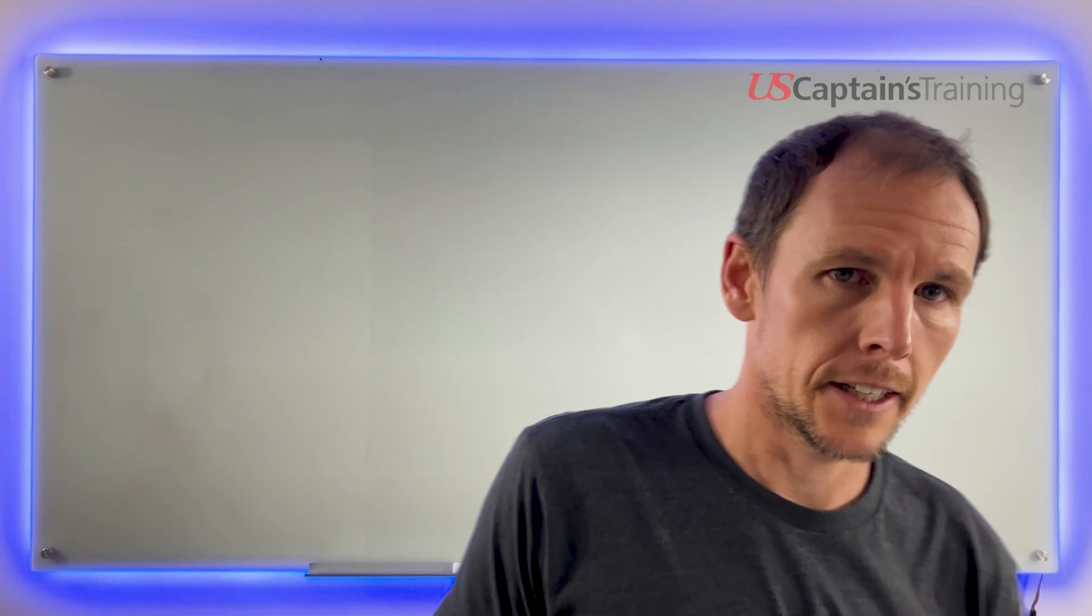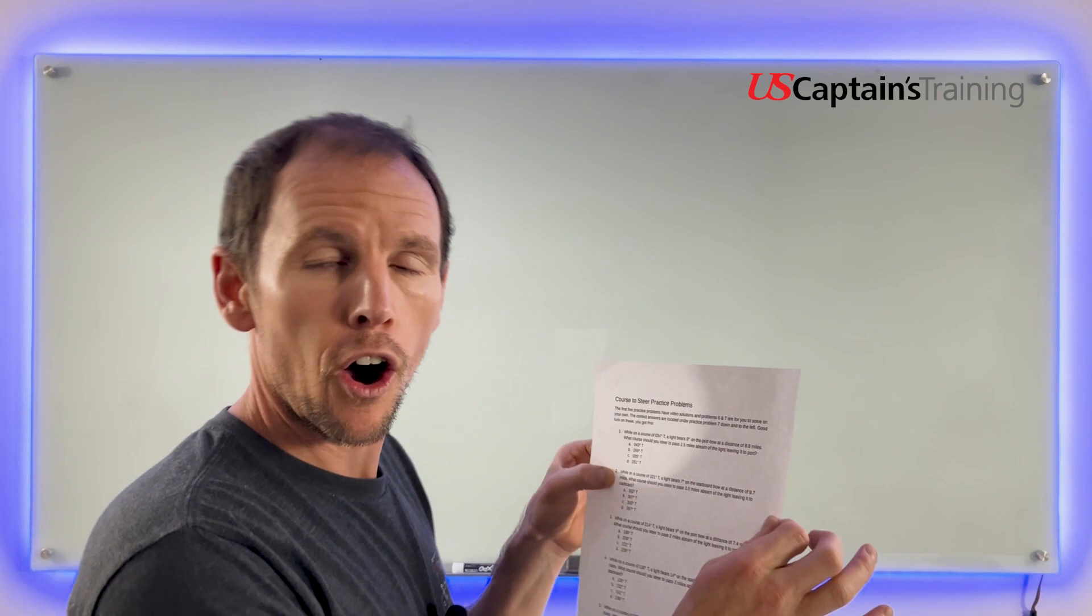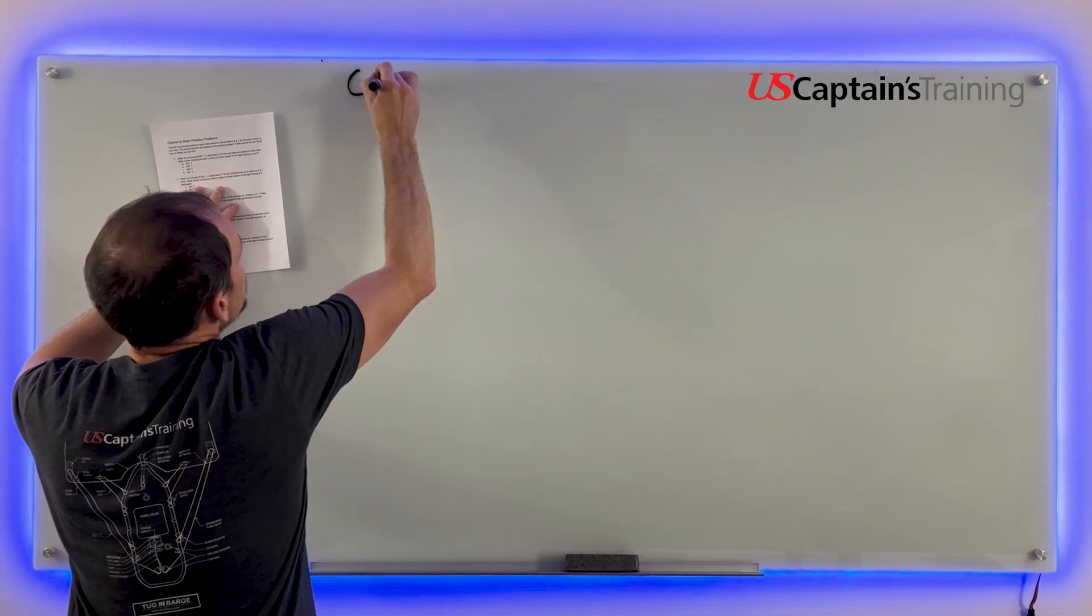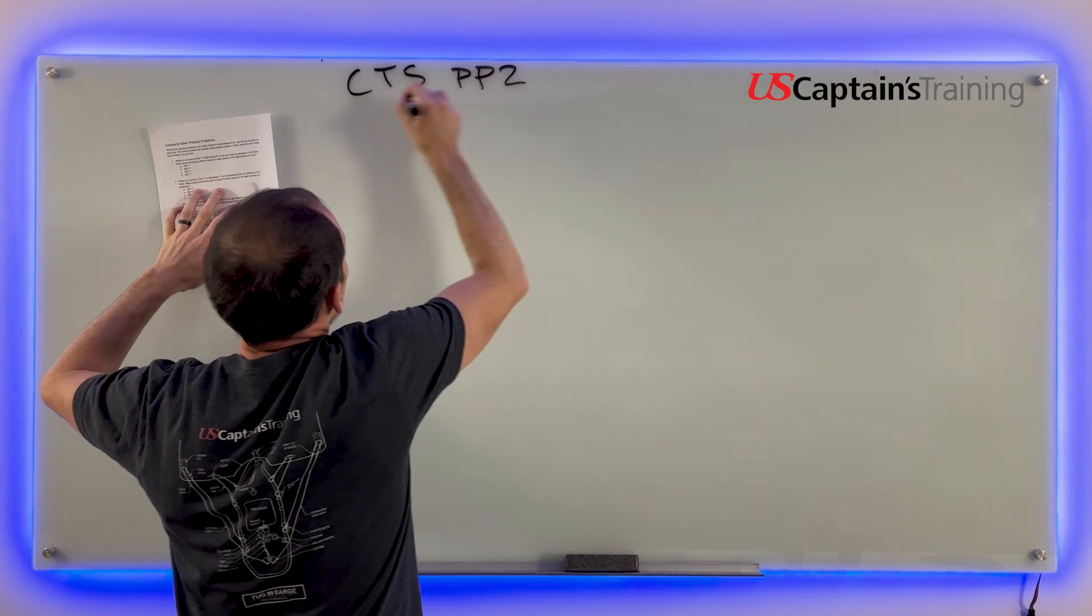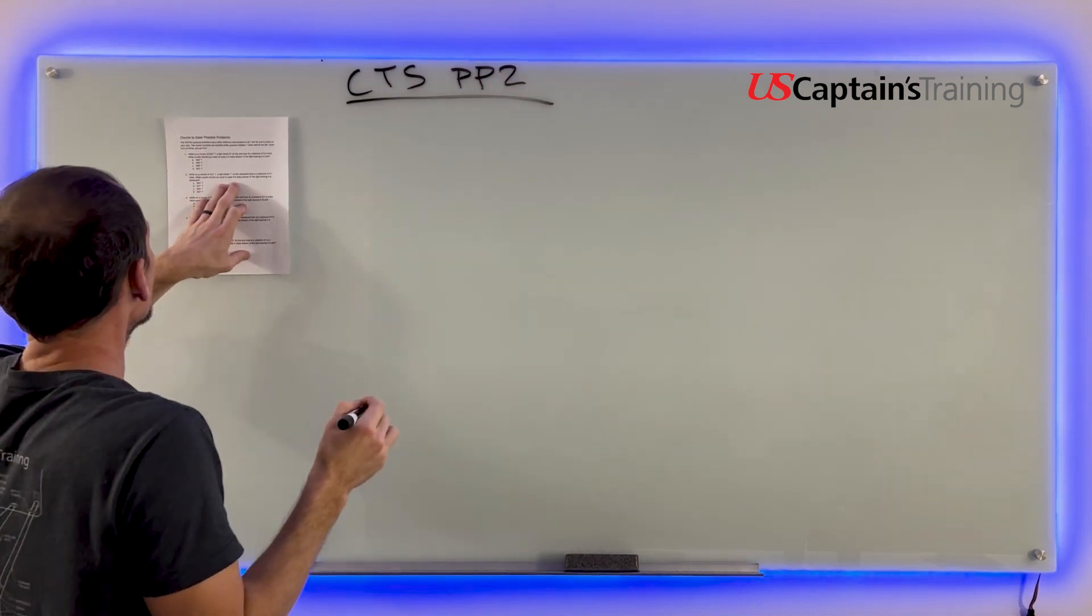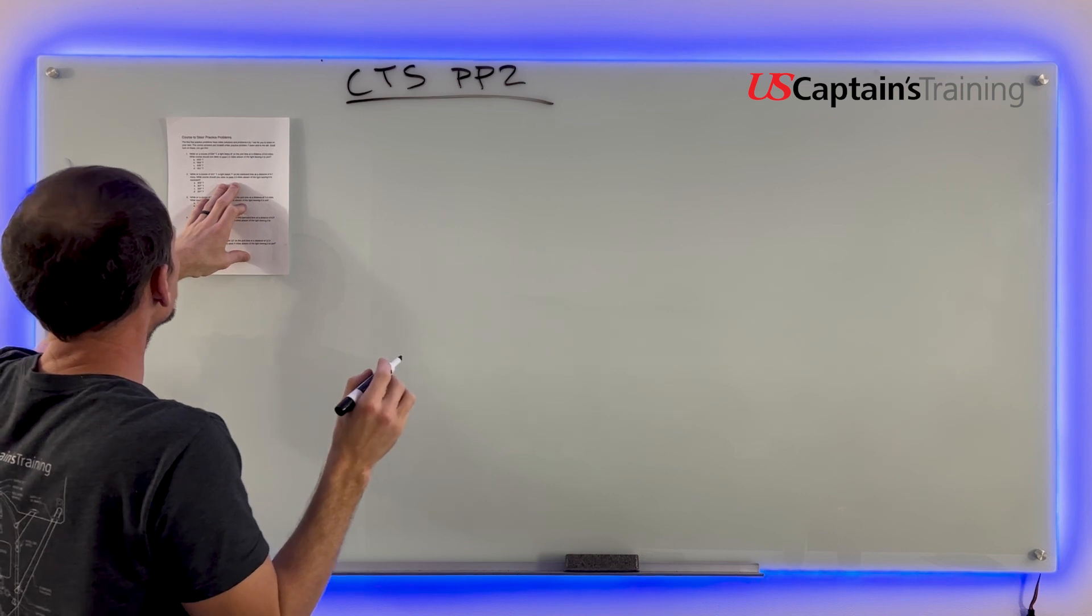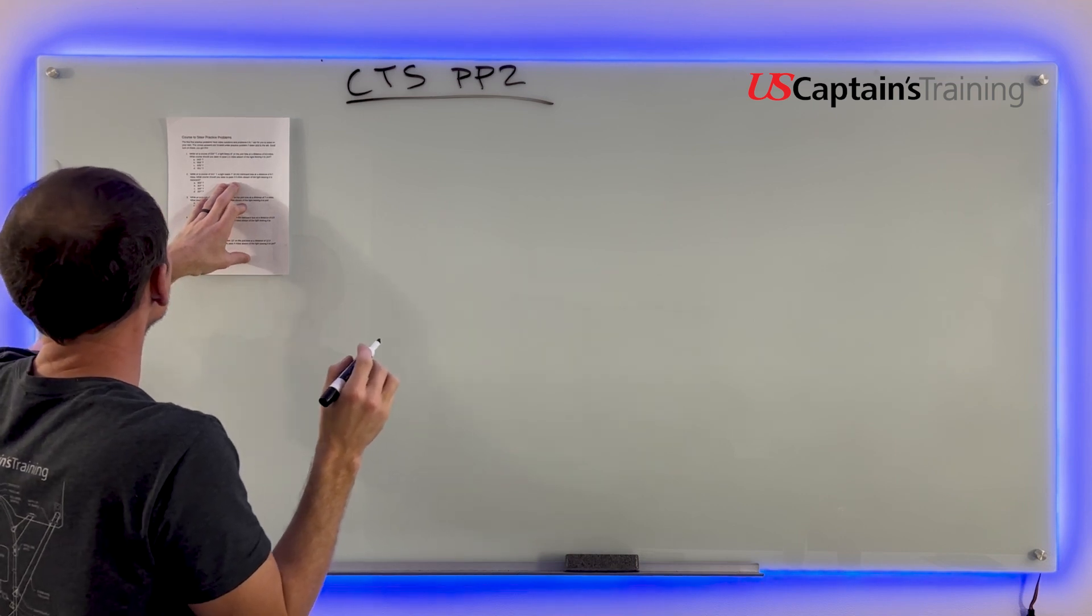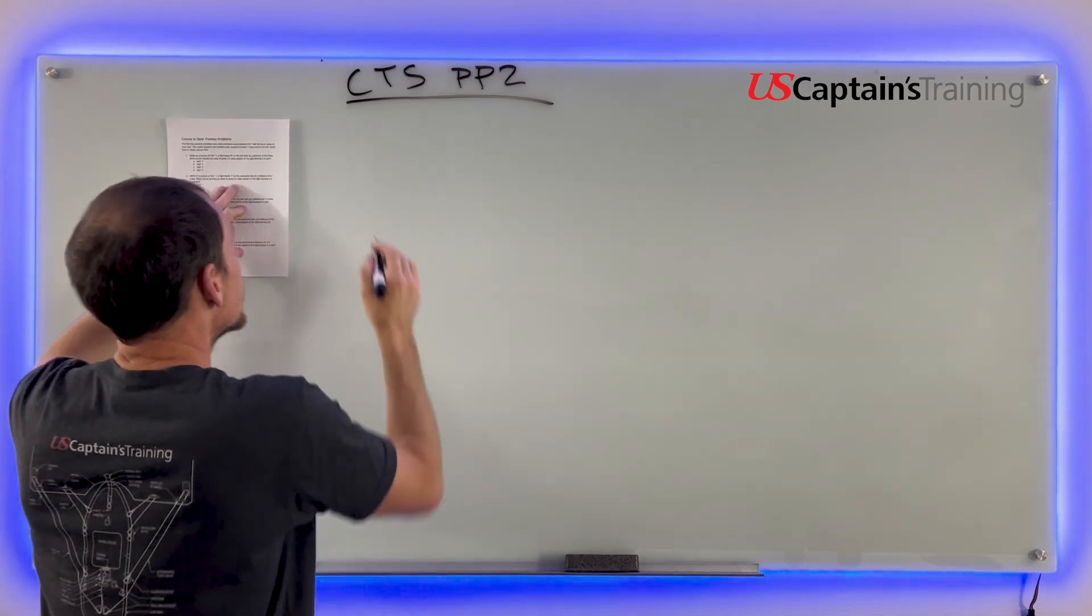Course to steer practice problem 2. Let's check this out. We're going to read the problem and take all of the information out of it. Course to steer practice problem 2. And we read the problem. There's a bunch of information in there. Let's check it out.